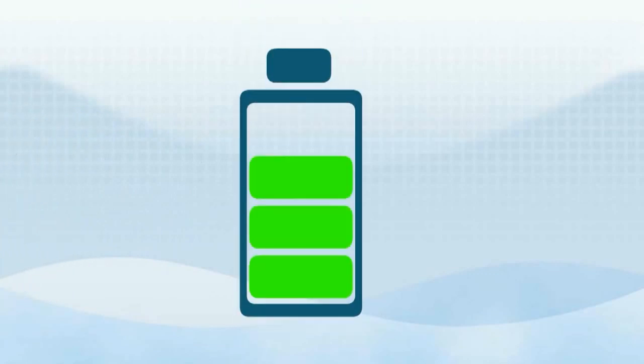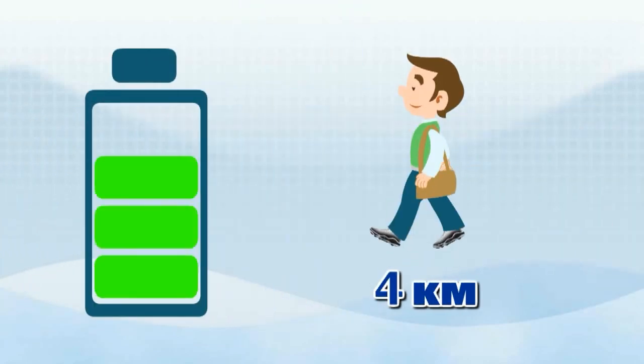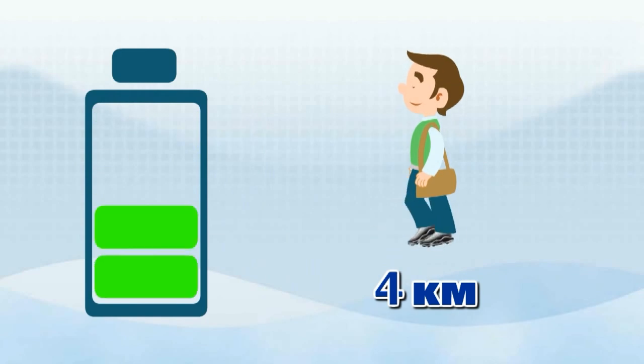At present, the configured battery of electric shoe with full energy has an endurance of 4 km, which can meet the walking need of a person.